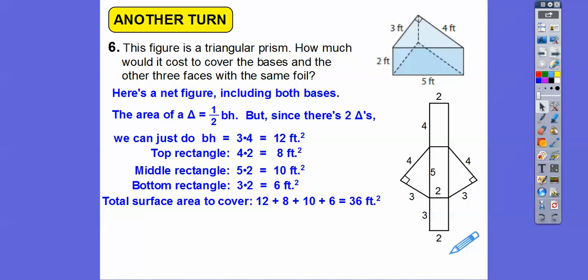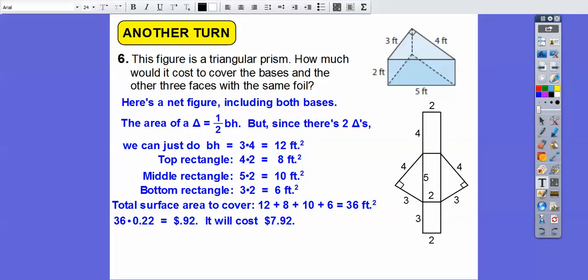The foil costs 22 cents per square foot, so we take 36 and multiply it by 22. We get 7.92 — that should be $7.92. We answer it in the context of the problem: the foil will cost seven dollars and ninety-two cents.